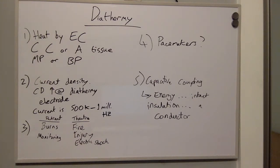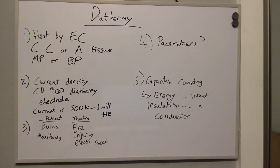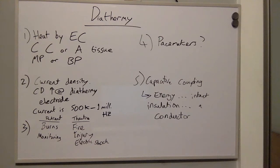The two modes of diathermy include monopolar or bipolar diathermy. How does diathermy cause coagulation? Diathermy causes coagulation by use of an electrical current generating heat, on the principle that there is a high current density at the tip of the diathermy electrode. The electrical current used in diathermy is in the region of half a million to one million hertz.